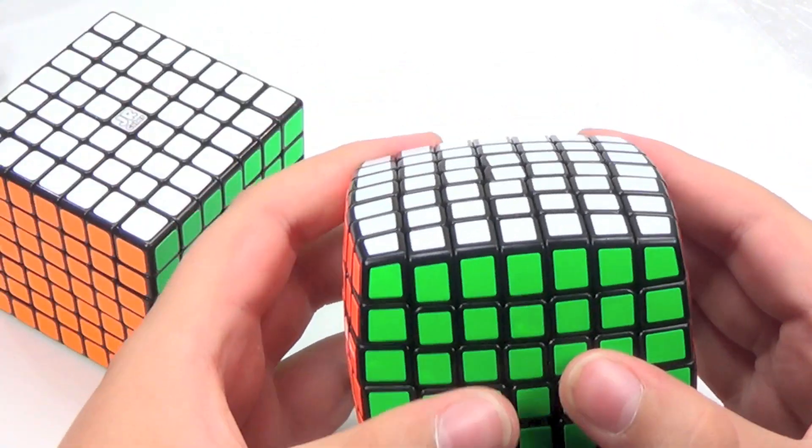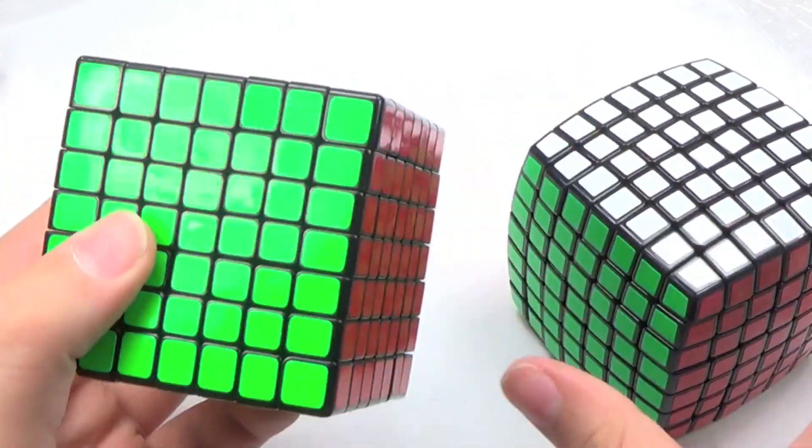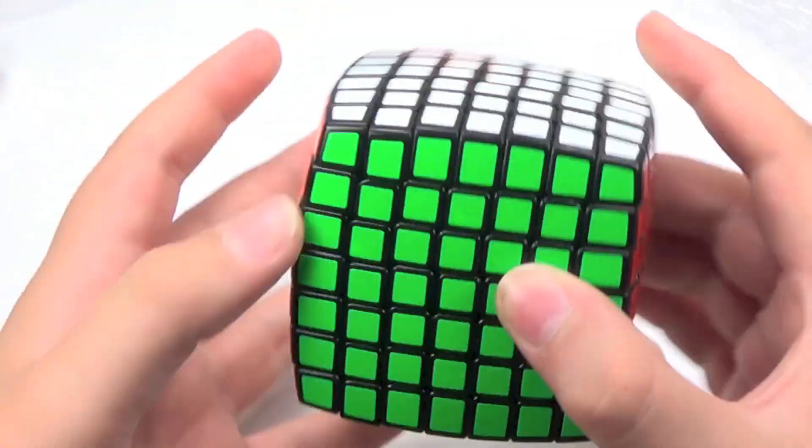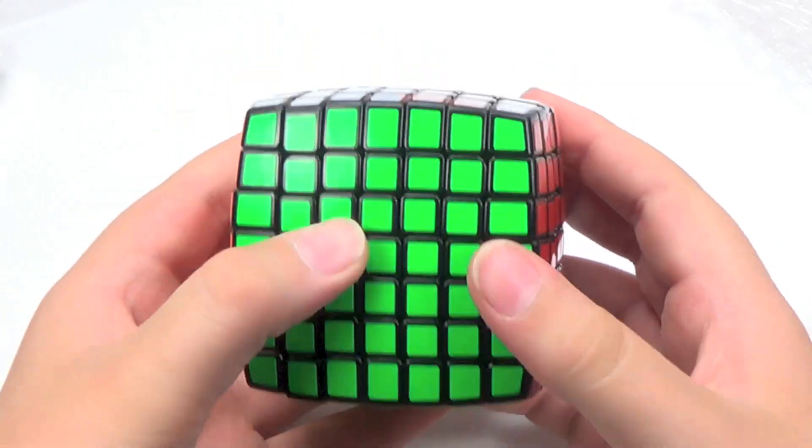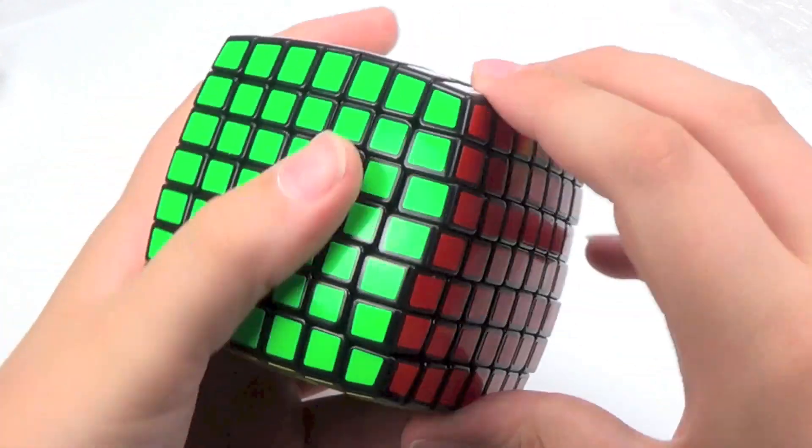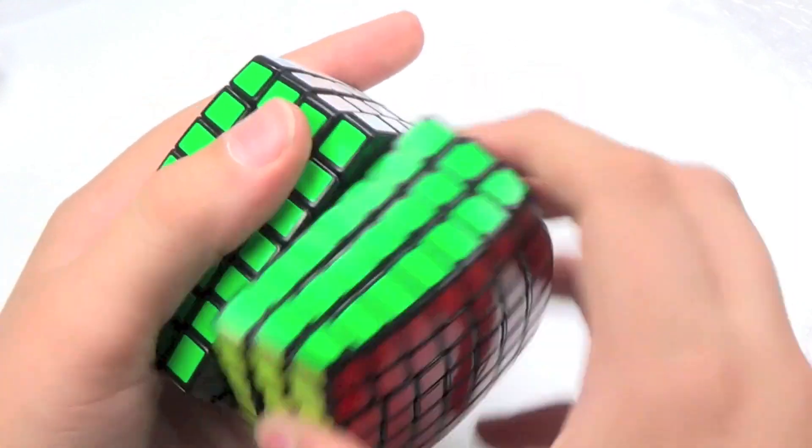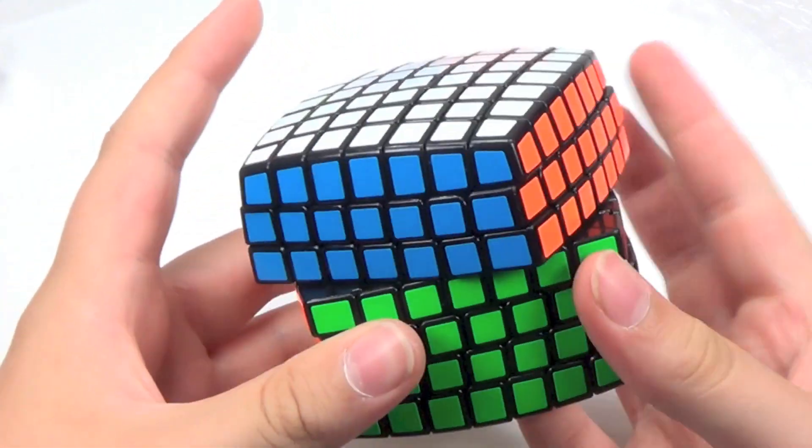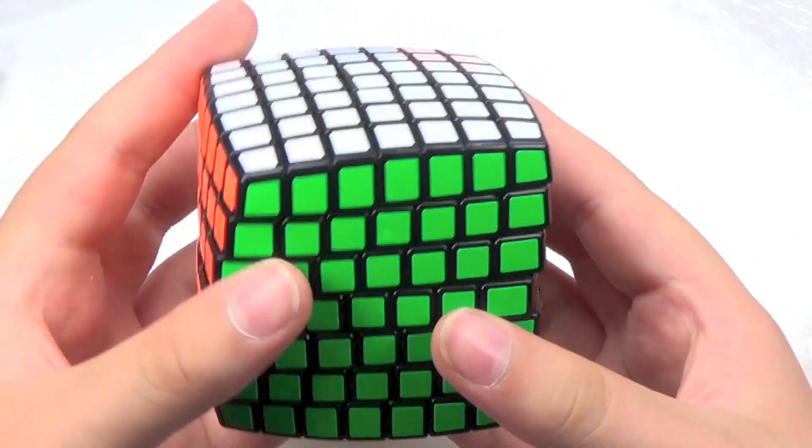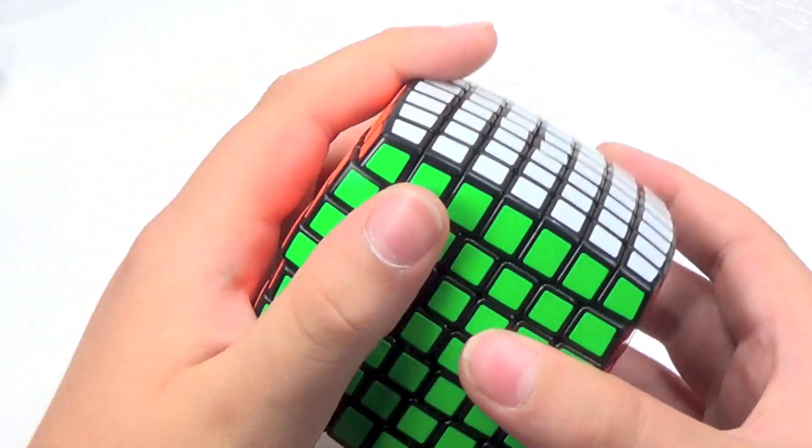In the hand, it feels just slightly bigger. But this one is square, so, but anyway, let's just go on with first turns. Oh, wow. That is the smoothest 7x7 I've ever felt.